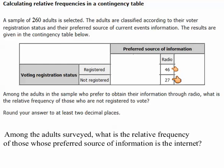46 of them are registered voters and 27 of them are not registered voters. Now we need to figure out the relative frequency, which is given as a decimal. The first thing we need to do is know how large our sample size is here. We're not looking at all 260 — we're only looking at this group of radio people. So to figure out my total, I need to add together the 46 and the 27.